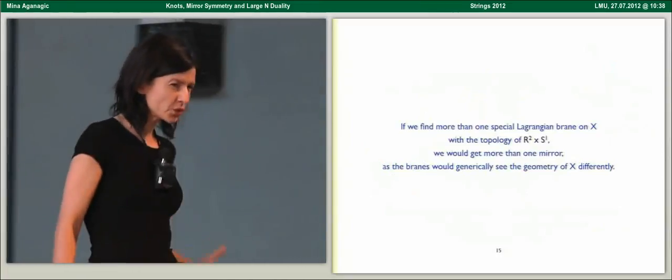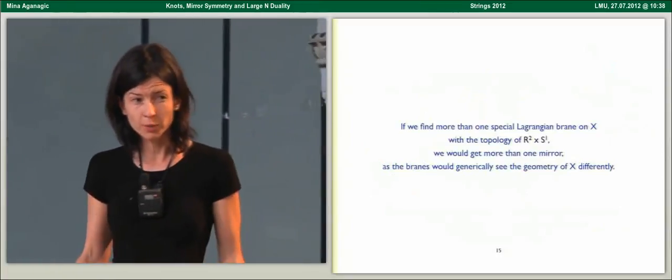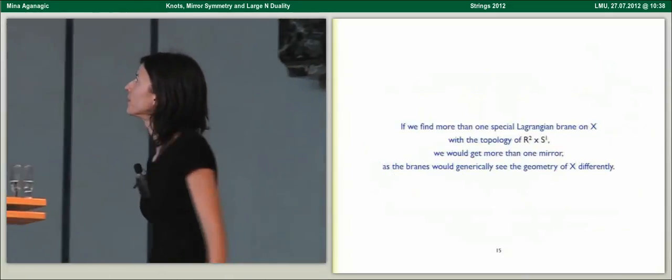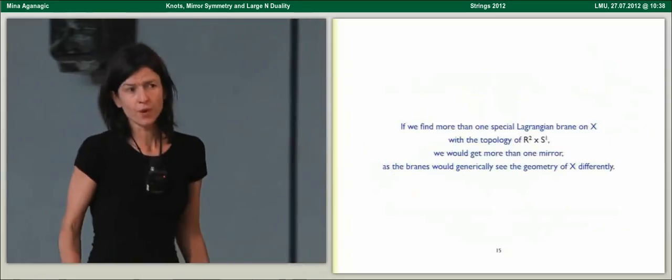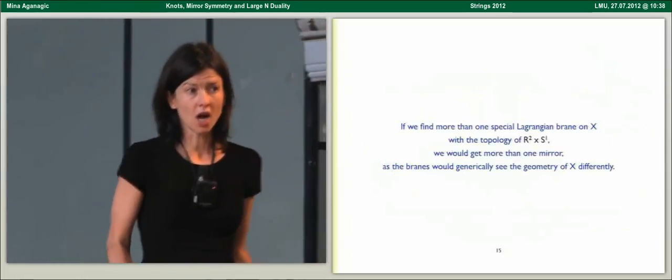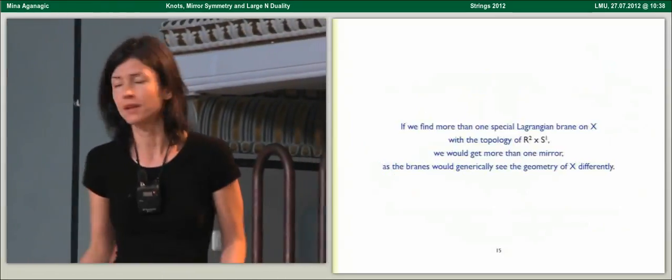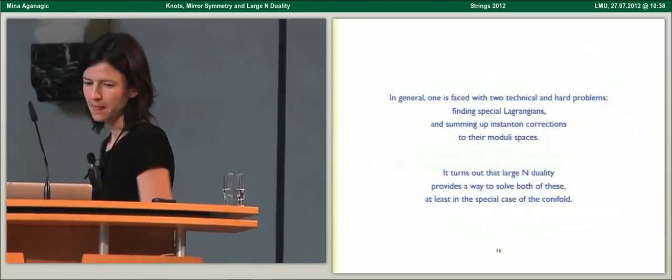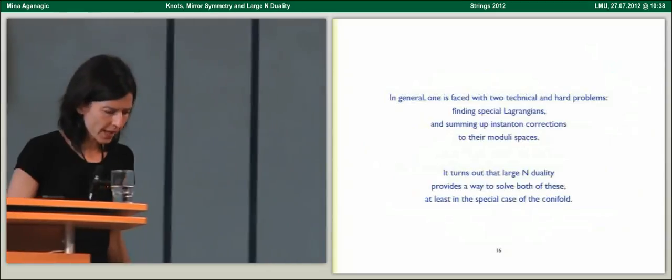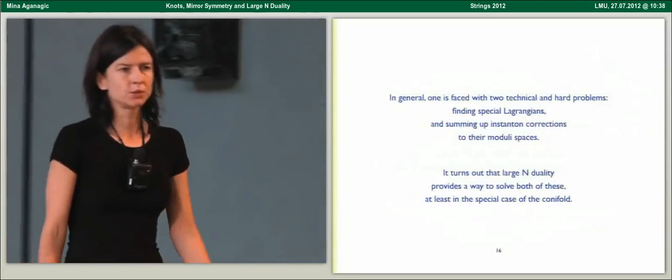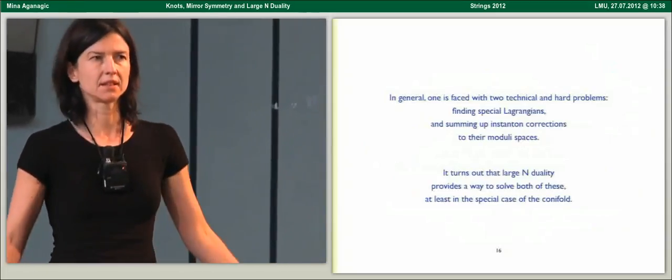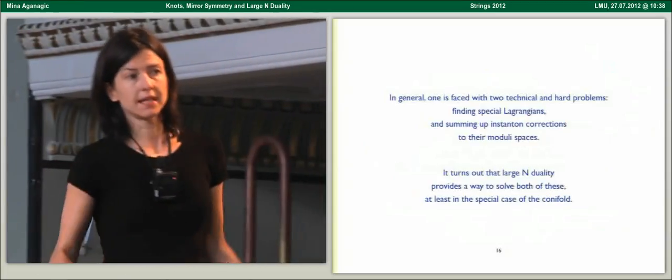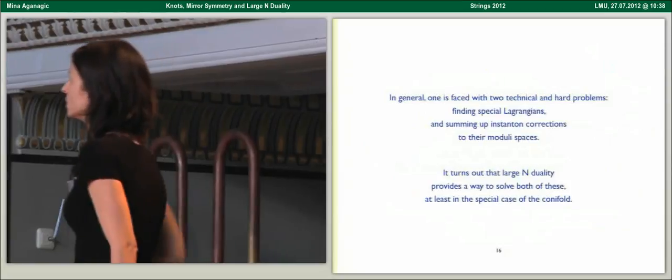If you were to find more than one Lagrangian of topology R2 times S1, you would get more than one mirror, as the different branes would generically see the geometry of X differently. In trying to verify this, one is faced with two hard technical problems: finding special Lagrangians and summing up disk instanton corrections to the moduli space.